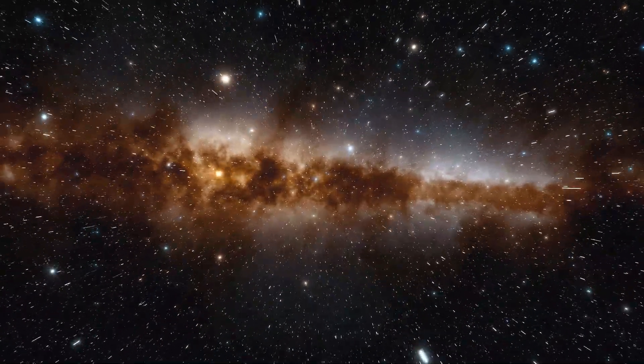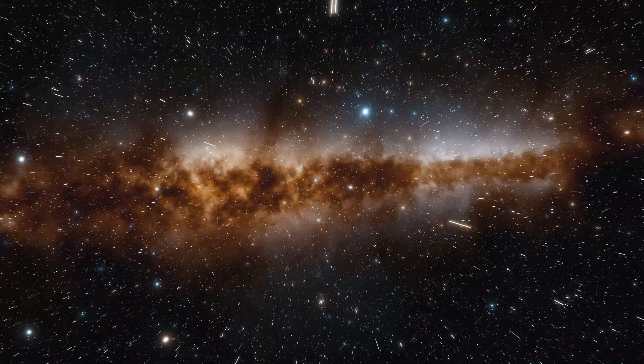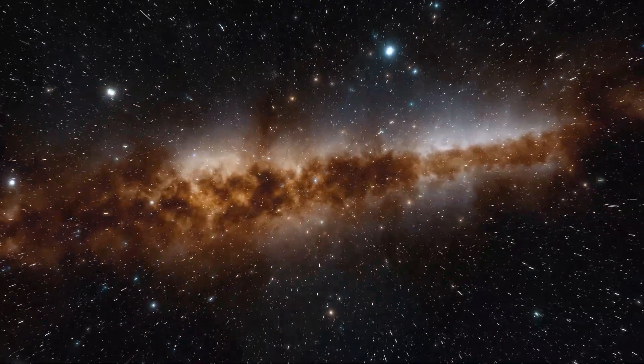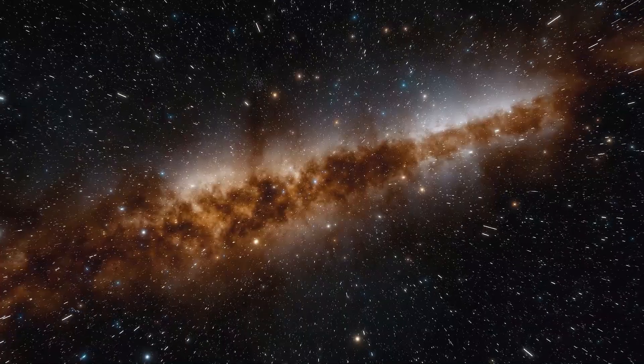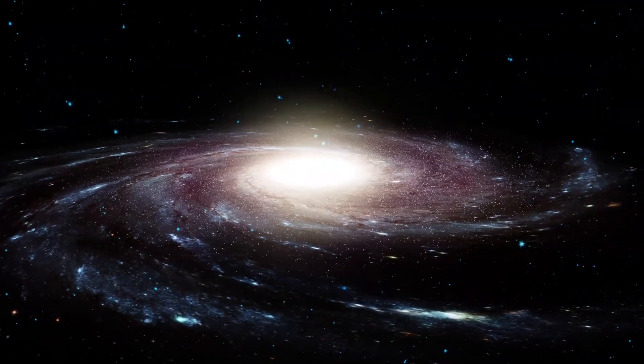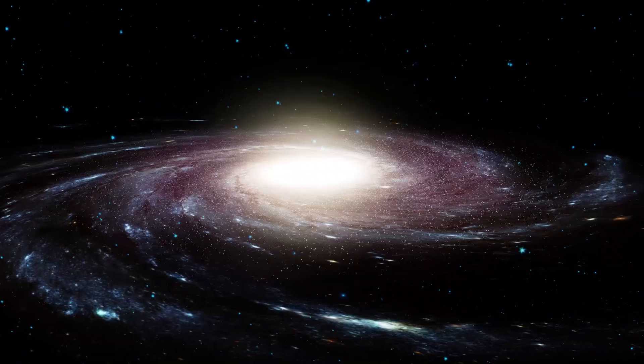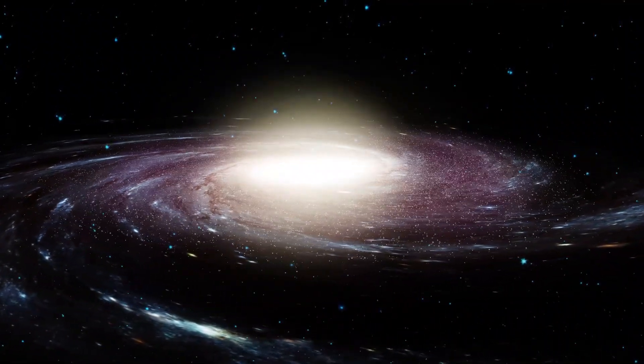But even the Milky Way isn't alone. It's part of the local group, a collection of about 50 galaxies spread over 10 million light-years. And this group drifts together through a much larger structure, the Virgo supercluster, home to thousands of galaxies arranged in threads and clusters across 110 million light-years.